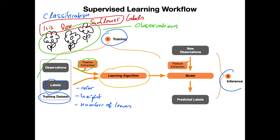Once you have these features and labels, you can train a machine learning algorithm to make predictions. After training, we can also say 'fitting' or 'parameterizing' the model — these terms are kind of synonymous. Some models are non-parametric, so 'parameterizing' wouldn't always be the right fit, but training, fitting, and parameterizing are generally synonymous in the context of deep learning.